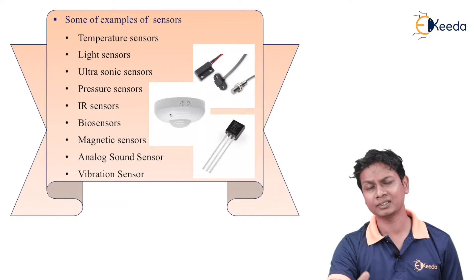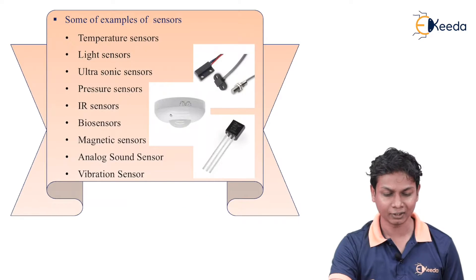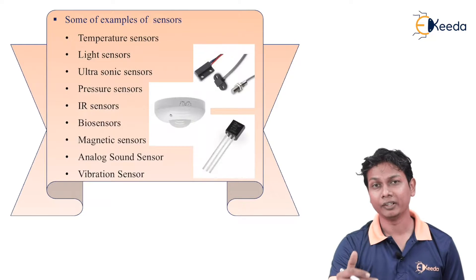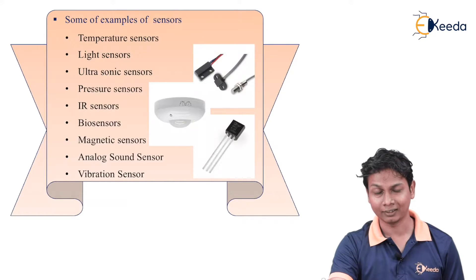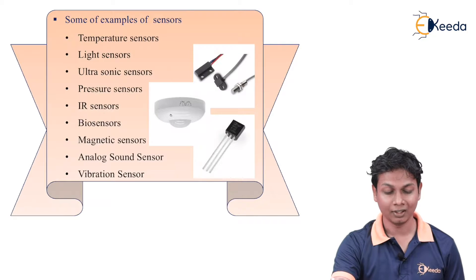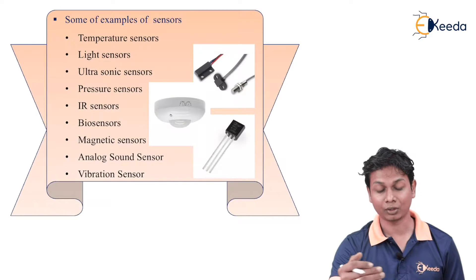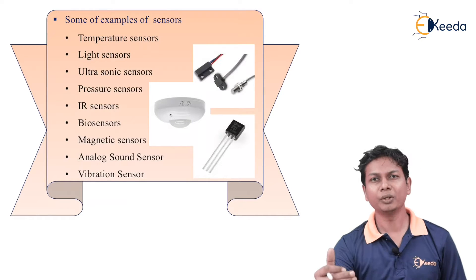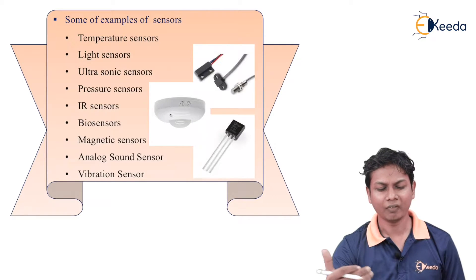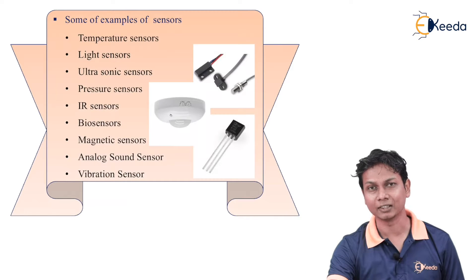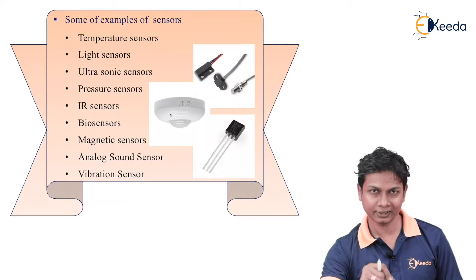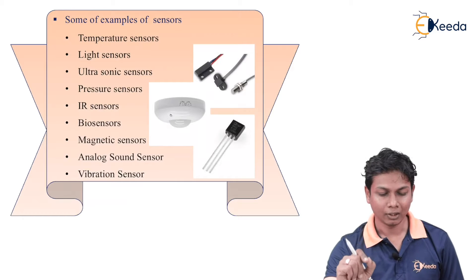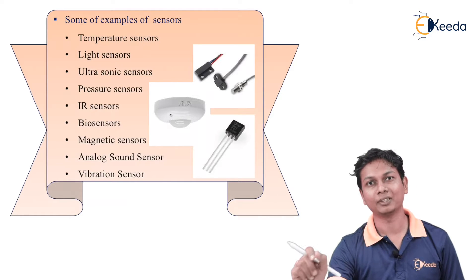There are various examples of sensors. We will start with different parameters: temperature sensor, light sensor, ultrasonic sensor, pressure sensor, IR sensor, biosensor, magnetic sensor, analog sound sensor, and vibration sensor. Here is the list of various examples of a sensor. All these sensors in this list are physical parameter sensors.